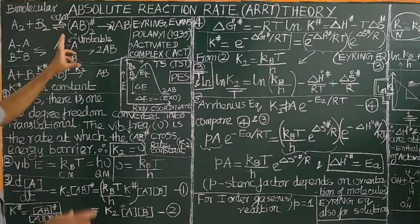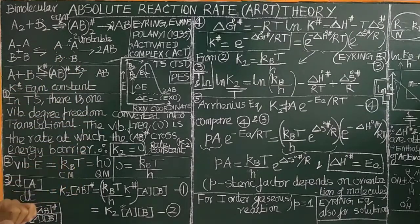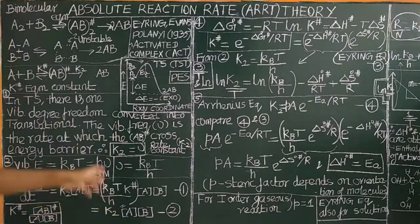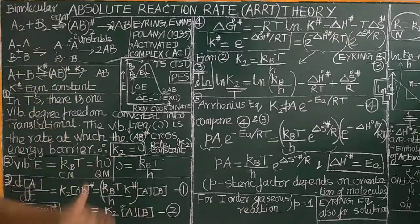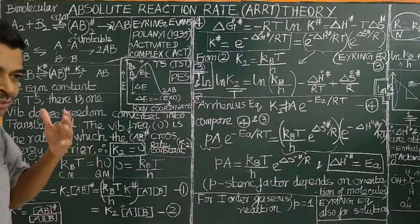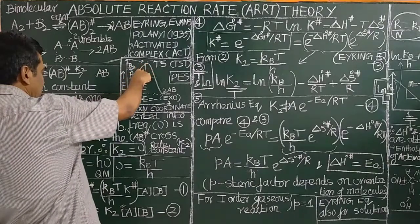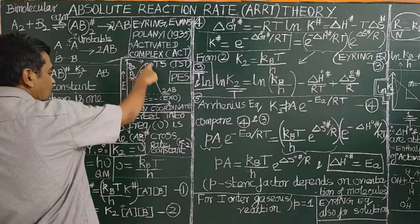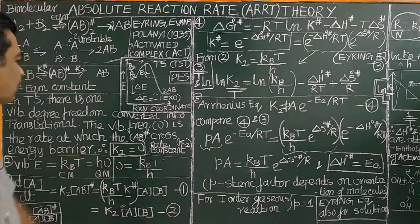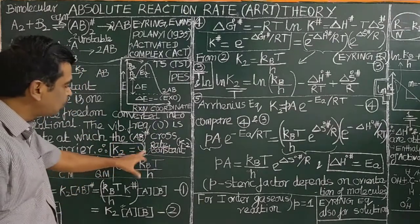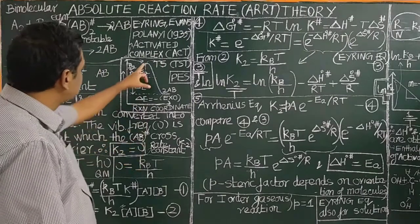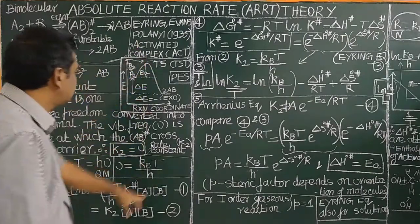One of the vibrational degrees of freedom — the vibrational frequency — is equal to the rate of decomposition of the activated complex. The vibrational frequency is the rate at which the reactants cross over the energy barrier, that is, the rate at which the activated complex decomposes to give the product. Therefore, the rate constant K2 is equal to the vibrational frequency of the transition state.